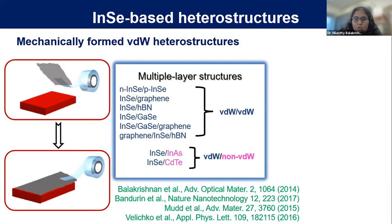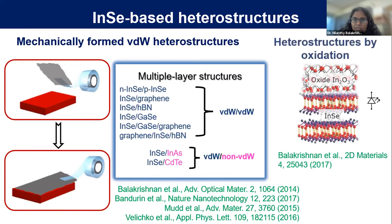All these heterostructures show promise for optical and optoelectronic devices. Another way to make a heterostructure is by oxidizing indium selenide in air — once oxidized, we can form an indium oxide (In₂O₃) layer, creating an indium selenide / indium oxide heterojunction. For example, taking p-type indium selenide and oxidizing it gives an n-type indium oxide layer, forming a p-n junction. We studied this as a light-emitting diode, which is promising for photoelectric applications.